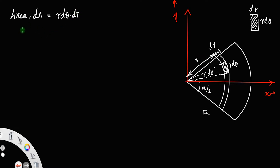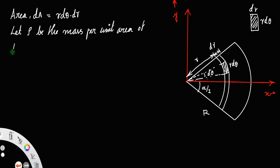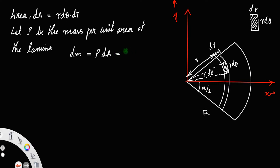Let rho be the mass per unit area of the lamina. Then the mass dm is equal to rho times d A, which equals rho times r d theta d r. Let us call that equation number 1.